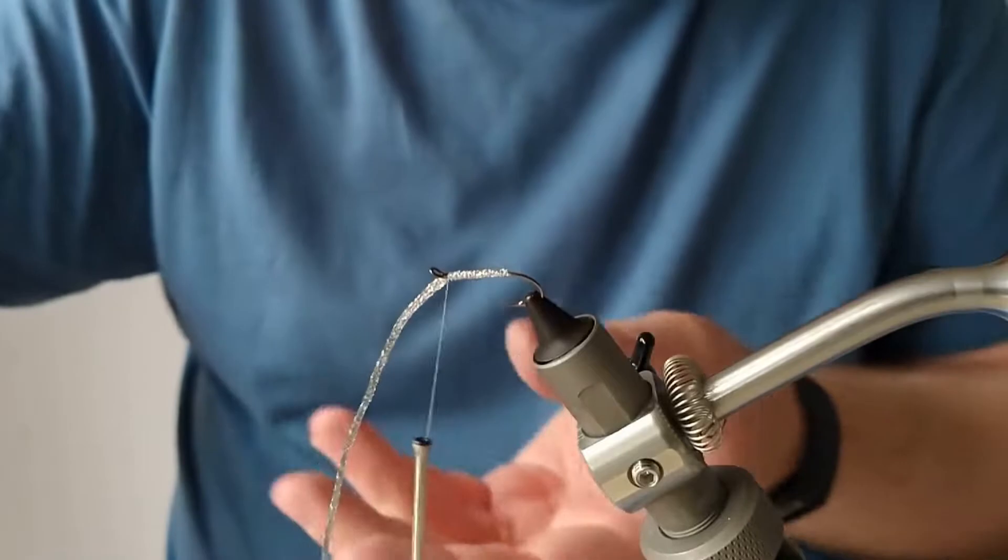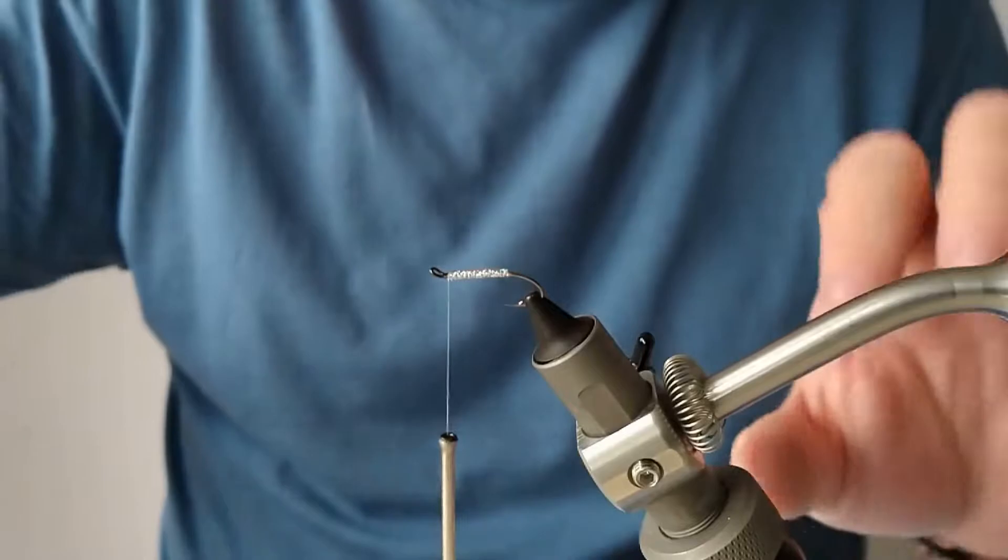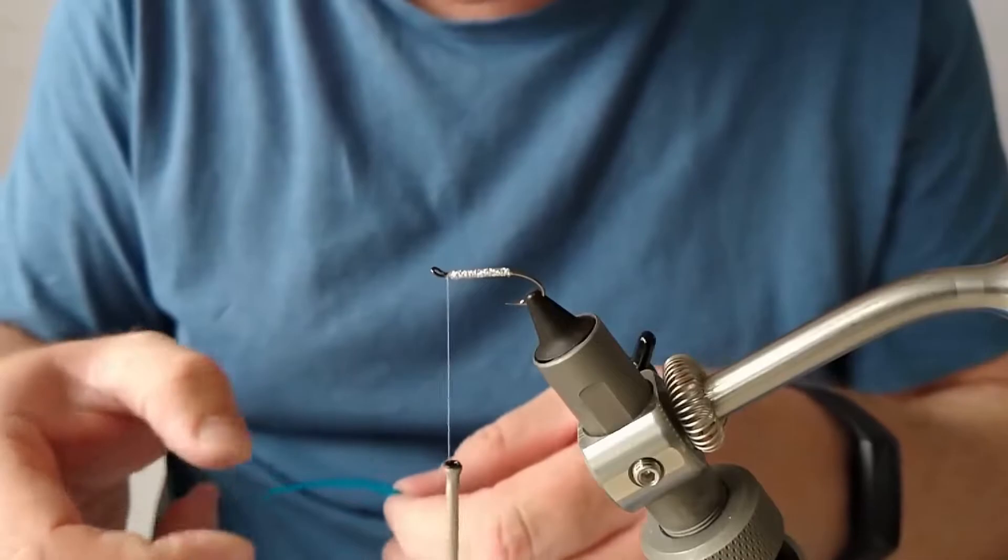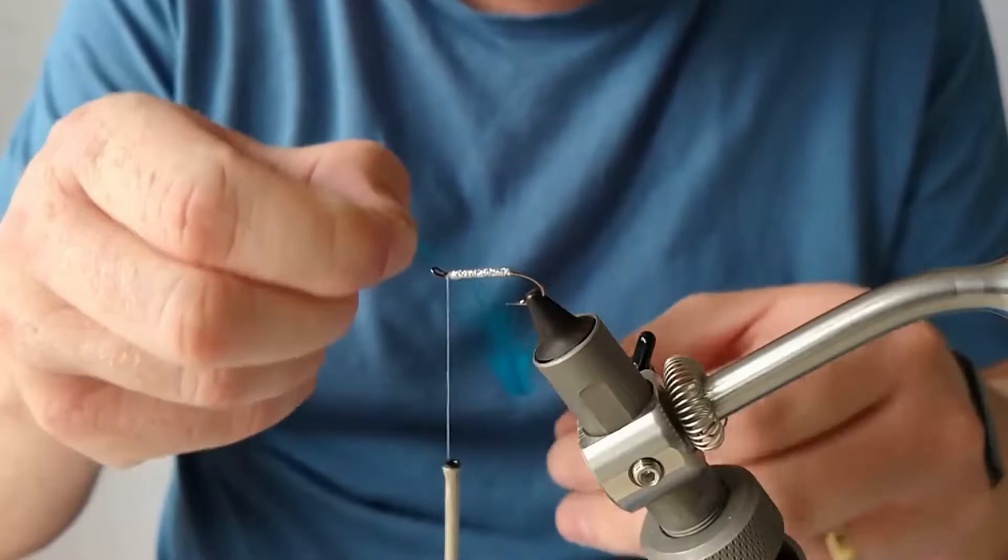The hook I am using is a size 10 low water committing. So it is quite a light wire. You can actually see the hook bend a little bit, but it is still a very strong hook. Okay, so the hackle is going to be a blue colour.